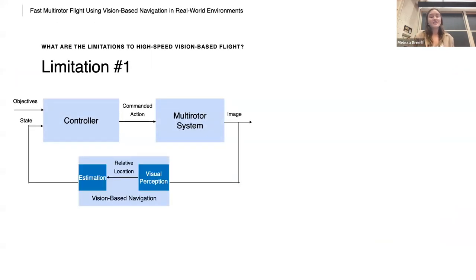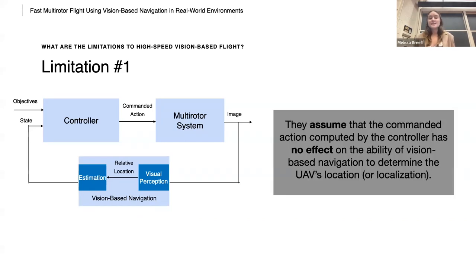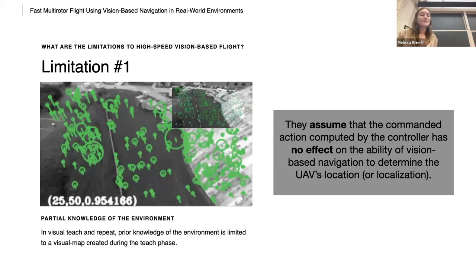So visual navigation, I'll include a visual perception that estimates a relative location, an estimation that then determines the state used by the controller. For simplicity, visual perception will include both visual odometry and visual localization. So the first limitation is that most current state-of-the-art controllers are perception agnostic. And what this means is that they assume that the commanded action computed by the controller has no effect on the ability of vision-based navigation to determine the UAV's location, or localization.